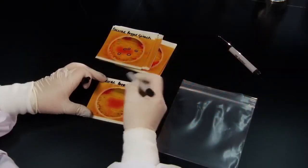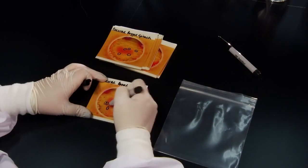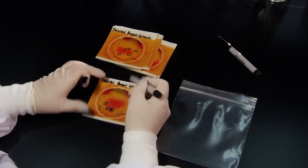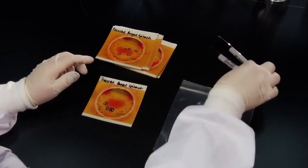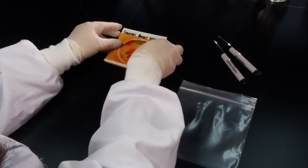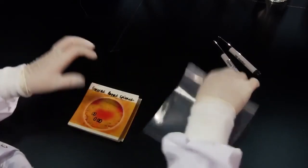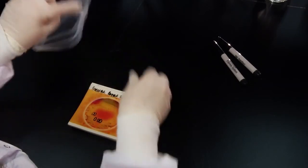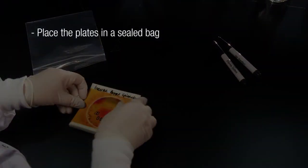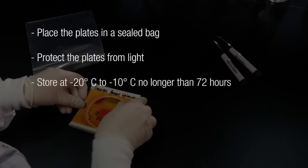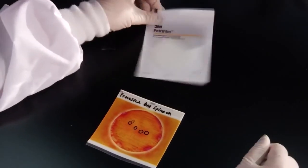Finally, if the 3M Petrifilm Salmonella Express plates cannot be analyzed within one hour of removal from the incubator, circle the presumptive salmonella colonies on the top film with a permanent ultra-fine tip marker. Place the plates in a sealed plastic bag. Make sure to protect the plates from light and store them at negative 20 to negative 10 degrees Celsius for no longer than 72 hours.